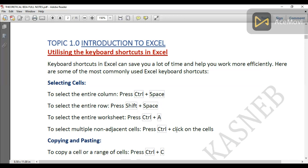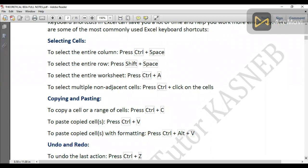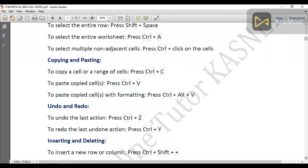To select multiple non-adjacent cells, press Ctrl and click on the cells. For copying and pasting: to copy a cell or range is Ctrl + C, to paste is Ctrl + V, and to paste with formatting or paste special is Ctrl + Alt + V. To undo and redo: to undo the last action press Ctrl + Z, to redo is Ctrl + Y.